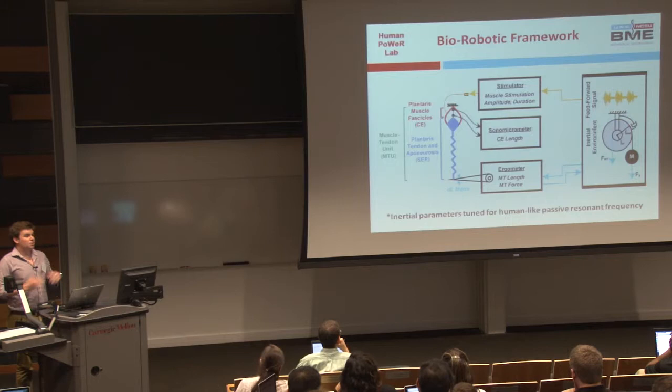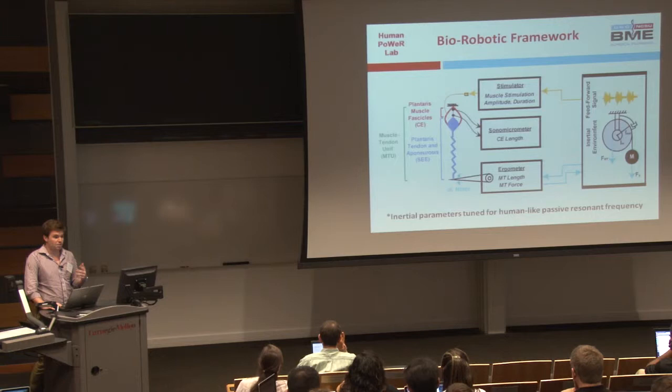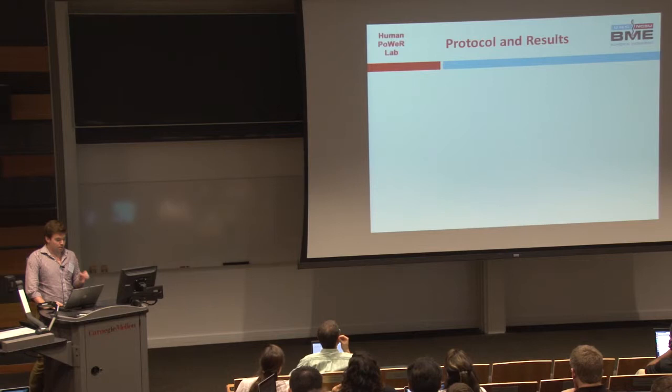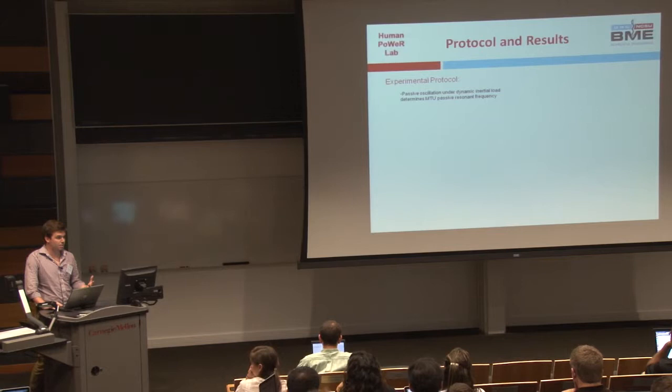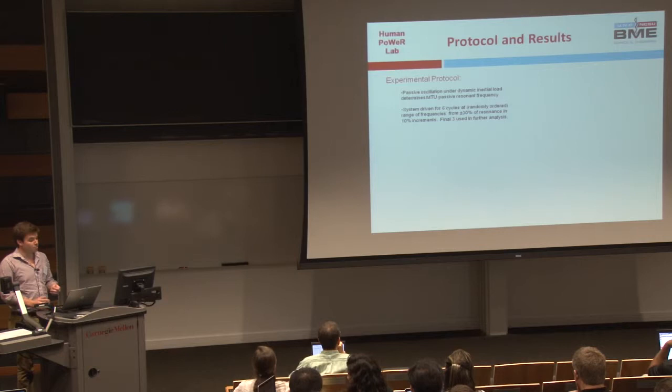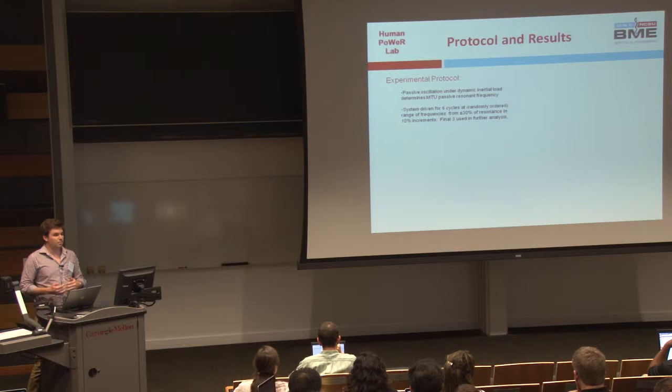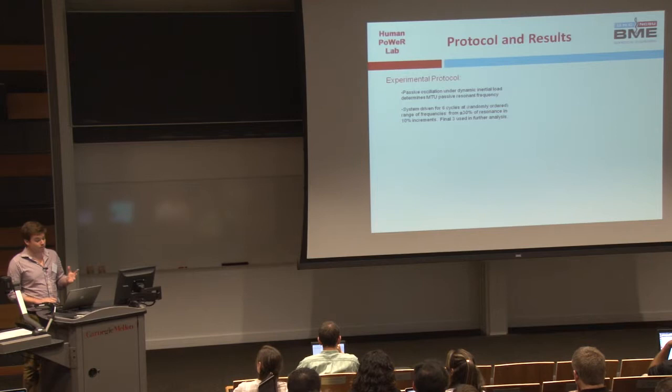We tune the inertial parameters of our simulated environment to actually mimic a human-like passive resonant frequency. Our experimental protocol: first we perform a passive oscillation with our dynamic inertial load and get a passive frequency response from the muscle. Next, we drive the system for six cycles of contraction in a randomly ordered range of frequencies, plus or minus 30% of our resonant frequency, and use the final three contractions in further analysis.